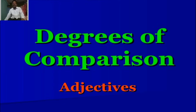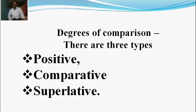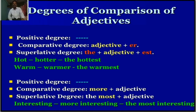Degrees of Comparison. Adjectives. There are three types of degrees of comparison: positive degree, comparative degree, and superlative degree. Now let's look at the degrees of comparison of adjectives in detail.